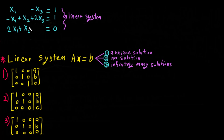Maybe you ask where some terms are — of course here it should be order one, but it's multiplied by zero, so that's why it vanishes. Same for this one — it's multiplied by zero, so it vanishes from here.